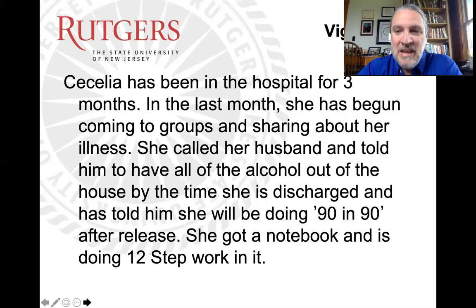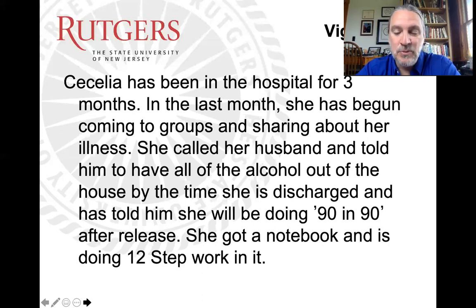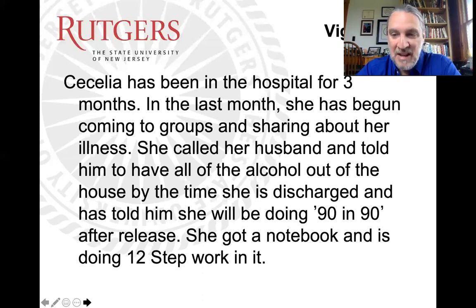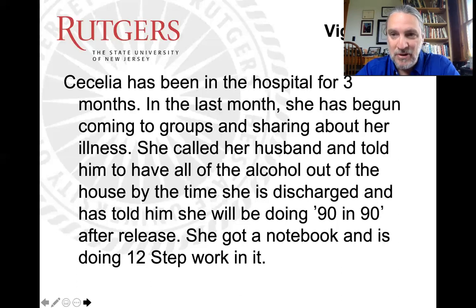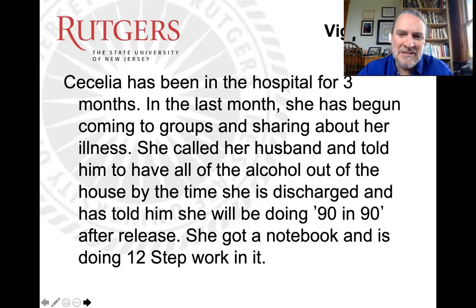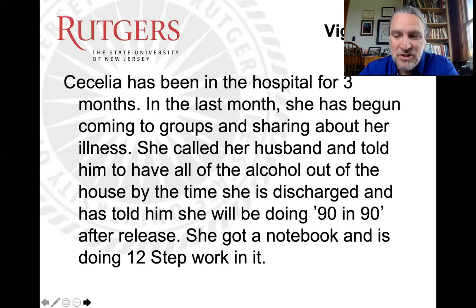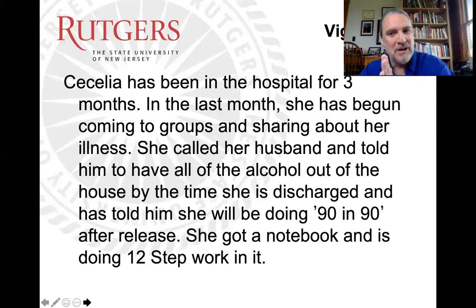Cecilia has been in the hospital and in the last month has begun coming to groups and sharing about her illness. She called her husband, told him to have all alcohol out of the house by the time she's discharged, and she will be doing 90 meetings in 90 days after release. She got a notebook and is doing 12-step work in it. If you ask Cecilia whether she has a problem with alcohol, the answer is yes, so she's not in pre-contemplation. She has pieces of a plan — alcohol out of the house, 90-and-90, 12-step work — so she's not in contemplation. I would say Cecilia is in preparation, very close to the action stage.